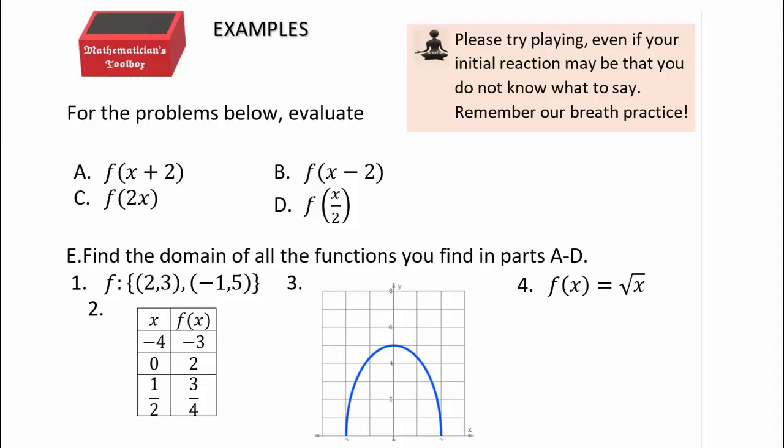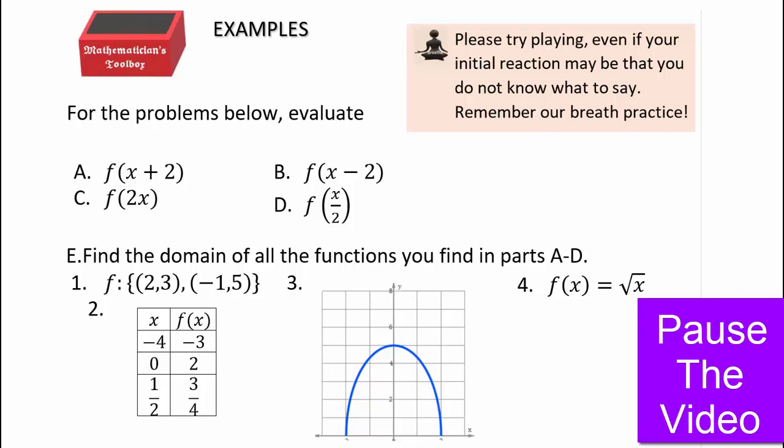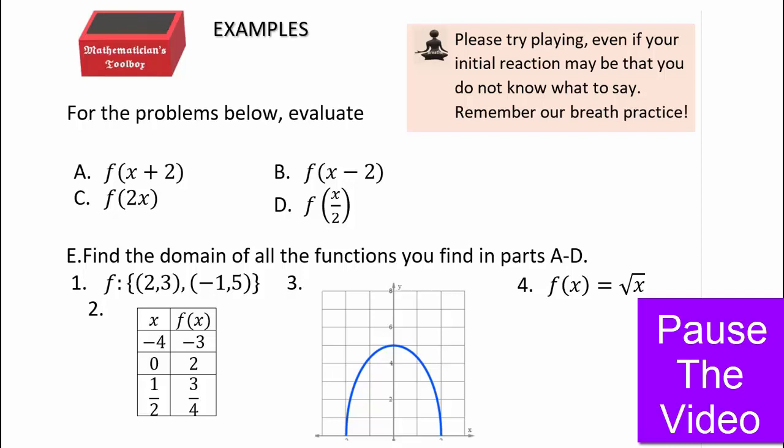It's very important to cultivate playfulness. Even though we haven't really discussed this, take a look at these four examples and find out for all of them what is f of x plus 2, f of x minus 2, f of 2x, and f of x over 2, and what changes — does the domain, the range — what is the effect of doing arithmetic inside on the input? Please try.